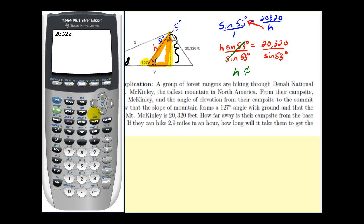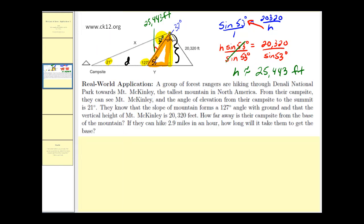Go to our calculator. 20,320 divided by sine 53 degrees, which is approximately 25,443 feet. Notice that this side is opposite this 21 degree angle.